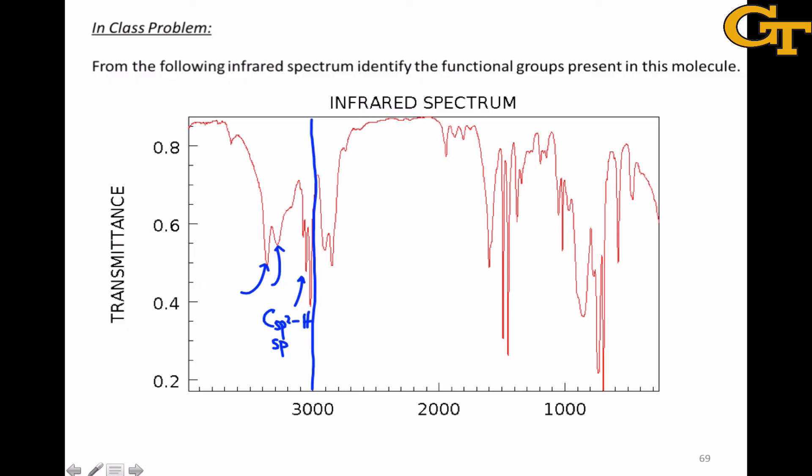And this two-pronged appearance in particular indicates the presence of a primary amine. Remember that a primary amine, which contains two NH bonds, will contain two peaks in the NH stretching region of the spectrum. So there's likely a primary amine within this structure as well.